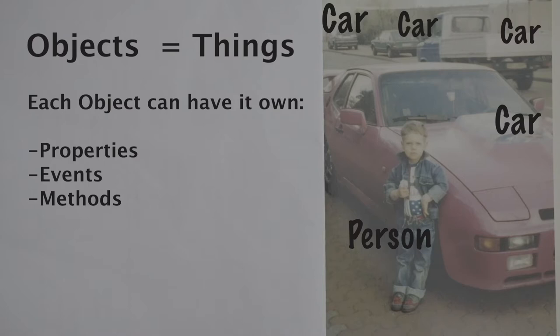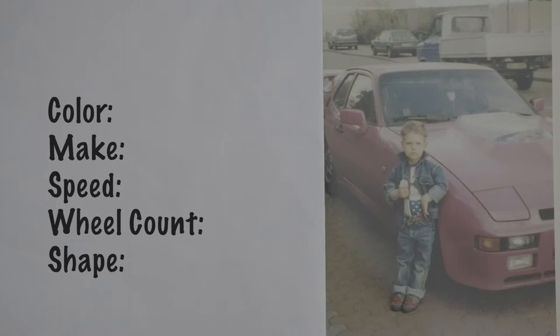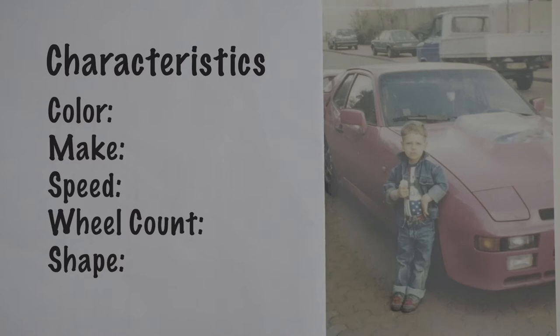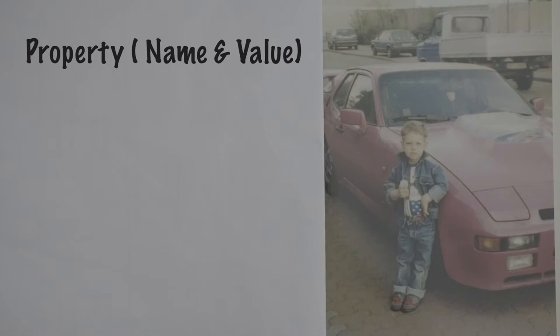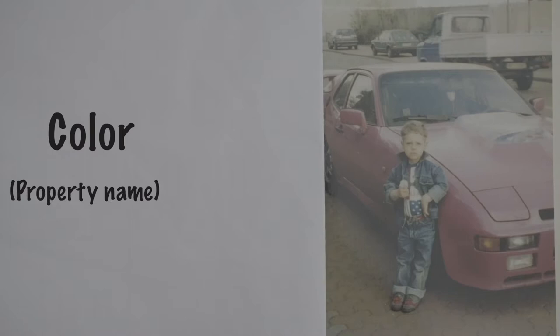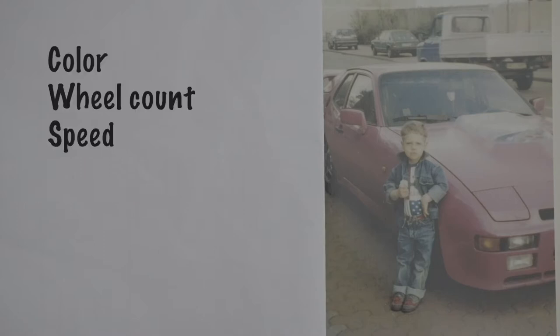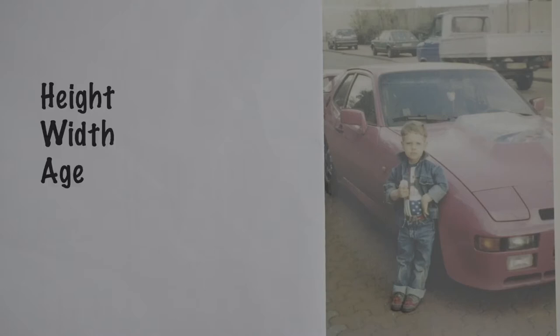Each object, or each thing, has properties, events, and methods. Properties are characteristics — what characterizes the object we're talking about. If you look at a car, it has a color, make, speed, wheels, and size. If you look at a person, that can be height, age, color. A property is basically a name and a value — so 'color' is a property name and the value is red, blue, or green.